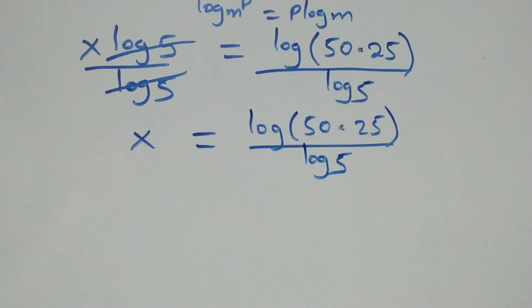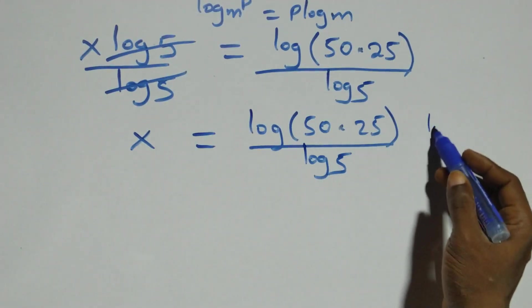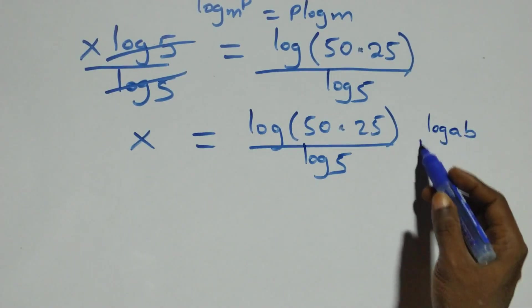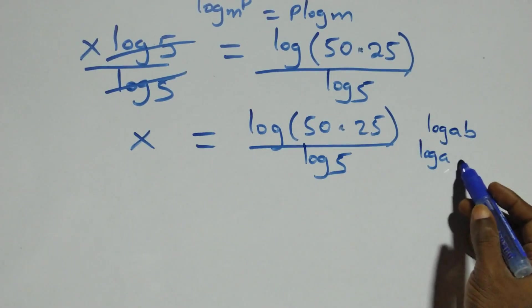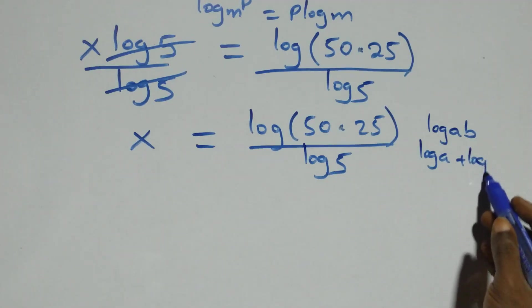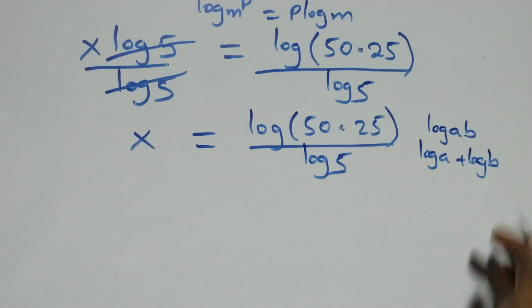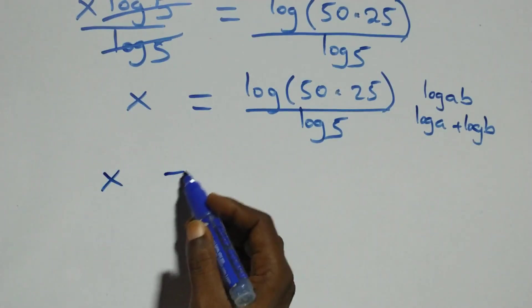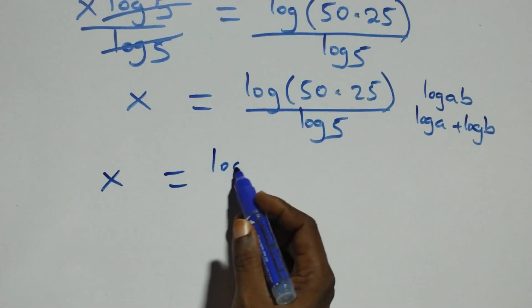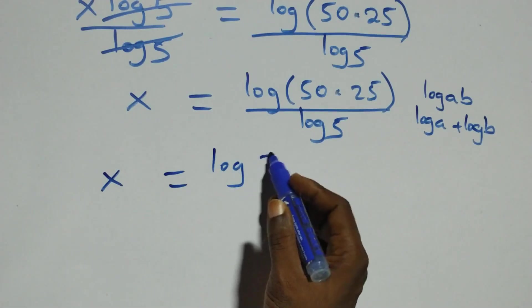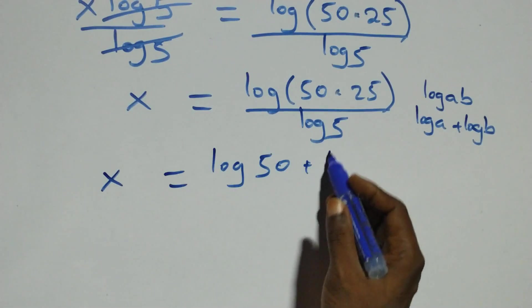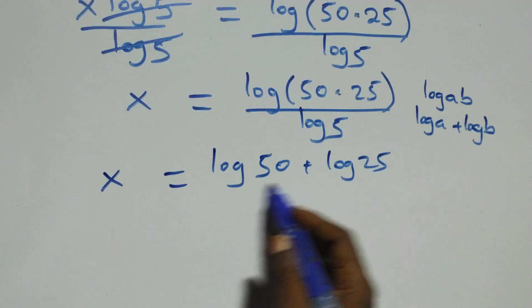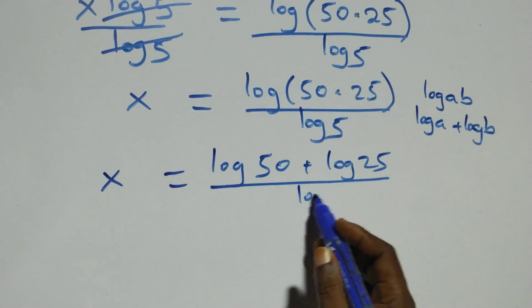This follows the log product rule. When we have log of a times b, this is the same as log a plus log b. So here we have x equals to log 50 plus log 25, all over log 5.